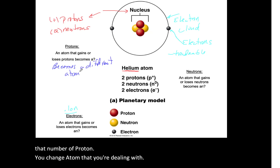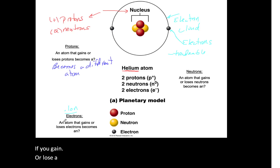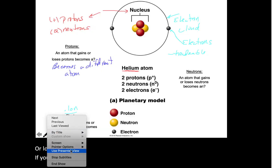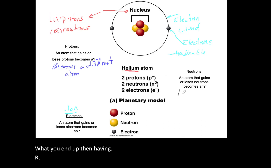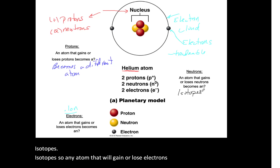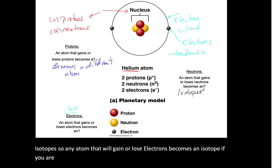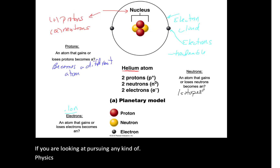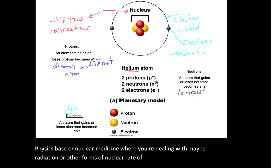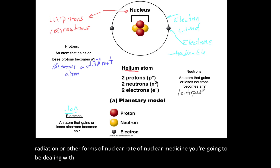Then we've got neutrons. If you gain or lose a neutron, what you end up having are isotopes. Any atom that gains or loses neutrons becomes an isotope. If you are pursuing any kind of physics-based or nuclear medicine — where you're dealing with radiation or other forms of nuclear medicine — you're going to be dealing with isotopes.